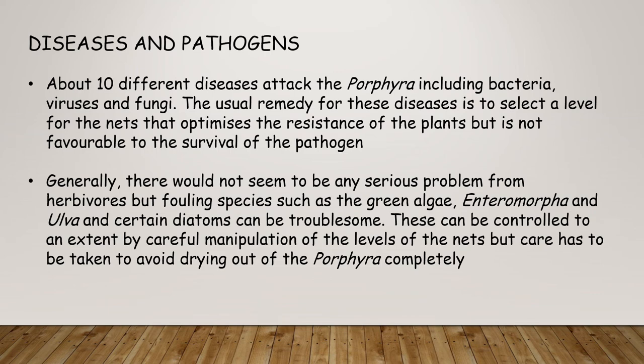About 10 different diseases attack Porphyra, including bacteria, virus, and fungi. The usual remedy is to select a level for the nets that optimizes the resistance of the plants but is not favorable to the survival of pathogens. Generally, there would not seem to be any serious problem from herbivores, but fouling species such as green algae — Enteromorpha and Ulva — and certain diatoms can be troublesome. These can be controlled to an extent by careful manipulation of the net level, but care has to be taken to avoid drying out the Porphyra completely.